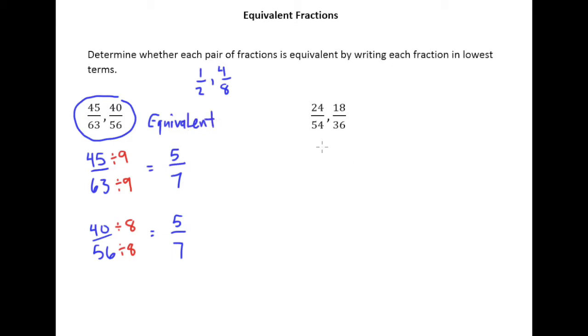Do the same thing for these two. 24 54ths, 18 36ths. 24 54ths, well, let's see, these are both multiples of 6, right, because 6 times 4 is 24, and 6 times 9 is 54. So that's going to give me a fraction of 4 9ths.